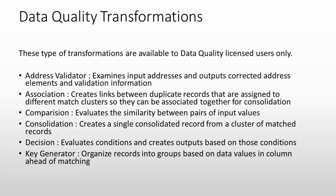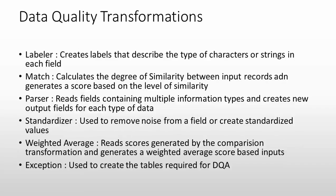The key generator transformation uniquely identifies records. Every business entity has a unique identifier — if the business does not provide one, the key generator can be used. It organizes records into groups based on data values in columns, ahead of the matching process. Other data quality transformations include labeler, match, parser, standardizer, weighted average, and exception.